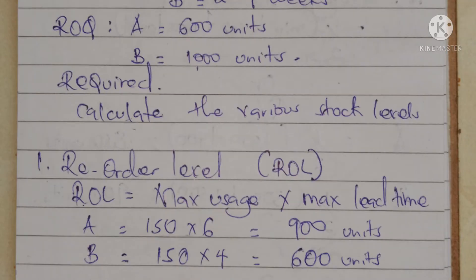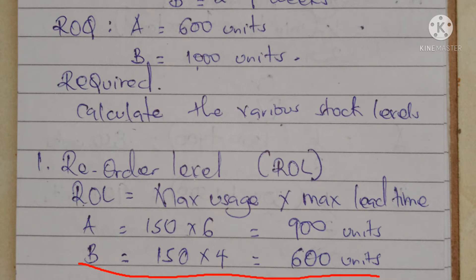For product B, the maximum usage is still 150 and the maximum lead time is four weeks (from the two to four week range). So 150 times 4 gives us 600 units. Therefore, the reorder levels are: product A — 900 units, product B — 600 units.